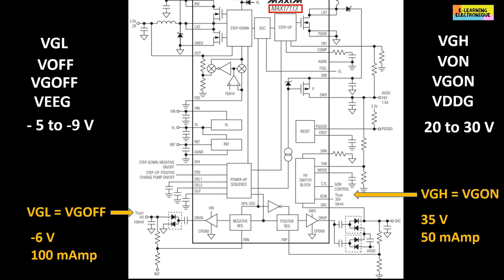The obtaining of these two voltages, one of which is negative, is done by means of a circuit called charge pump converter.